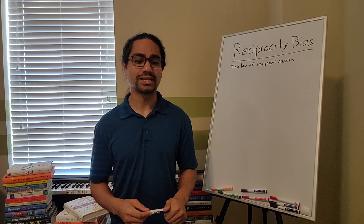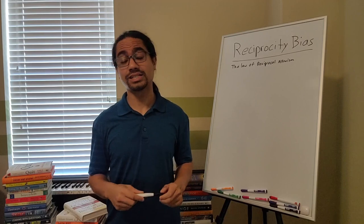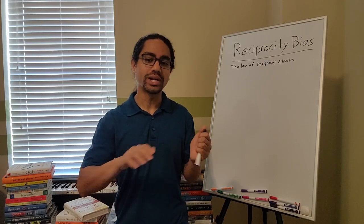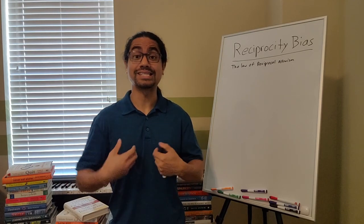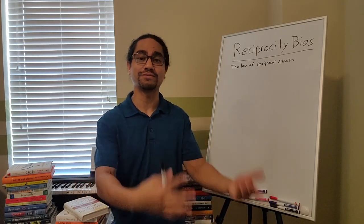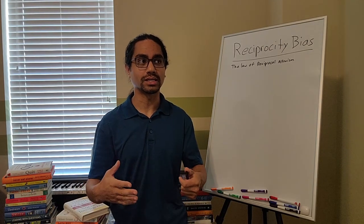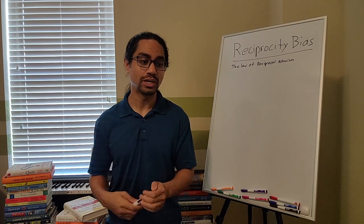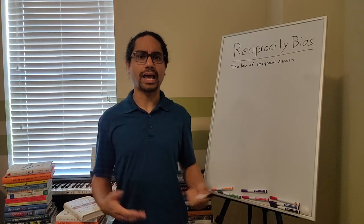So what does that mean? Let's just go ahead and define the reciprocity bias in a nutshell. Basically what it says is that whatever you do for somebody, they have a tendency, a desire even, to want to reciprocate that, which means to want to give back. Now, normally we think about this in terms of nice things that we do, charity, or helping somebody out, or giving somebody a hand of some kind.